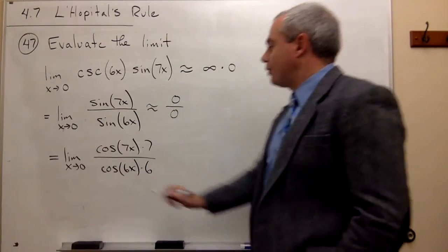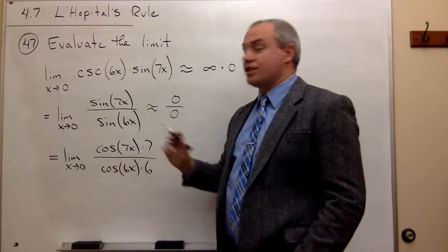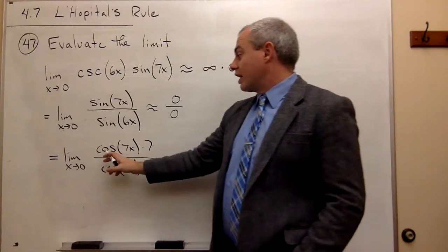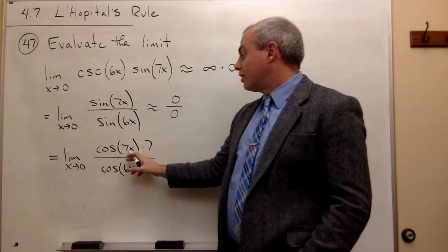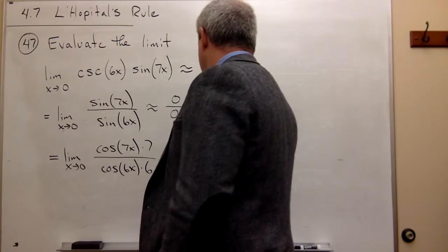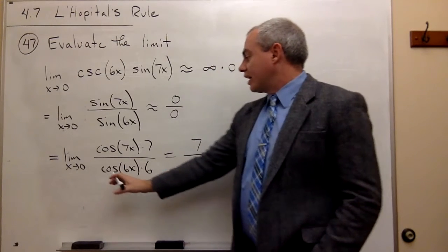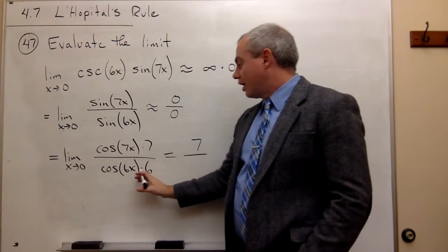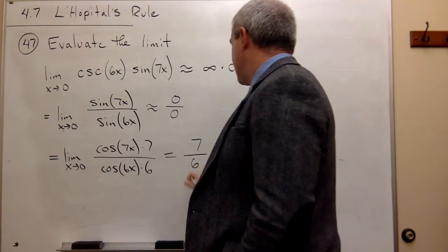So now if we plug in 0, notice cosine of 0 is not 0, it's 1. So we get cosine of 0 which is 1 times 7 which is 7. And we get cosine of 0 which is 1 times 6 which is 6.